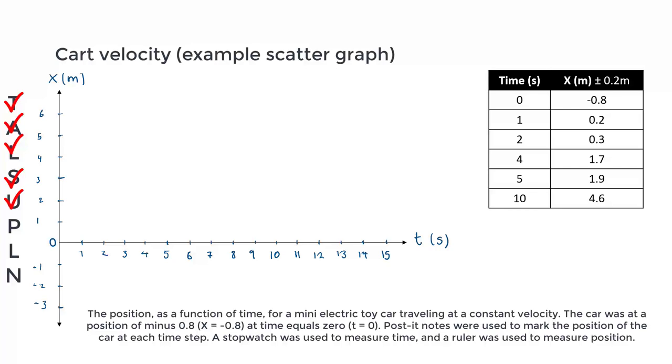Then we plot our points. Each row of the table is a set of coordinates which we plot on the graph. Even though the values don't increase evenly in the table, as seen by time jumping from 2 to 4 to 5 to 10, these are spaced out when they are plotted.